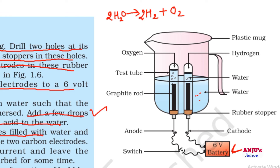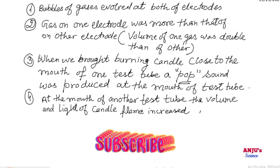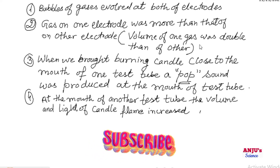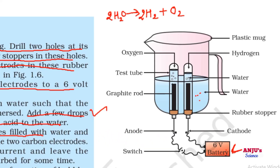Second observation was that the gas on one electrode was more than the other — the volume of one gas was double that of the other. That's because in this reaction, when water decomposes into hydrogen and oxygen, two molecules of hydrogen are formed but only one molecule of oxygen is formed. So the volume of one gas is double that of the other.